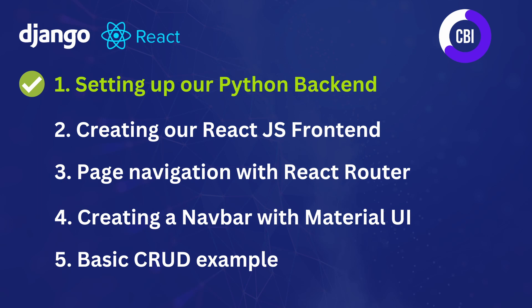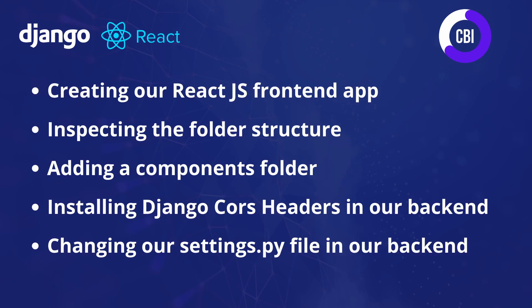This is not the first video in this series — in the last video we already started by setting up our Python Django backend. In the videos to come we will also look at page navigation with React Router, creating a nav bar with menu items using Material UI, and creating a basic CRUD example that shows how the frontend can communicate with our backend. But the focus of this video is creating our React.js frontend.